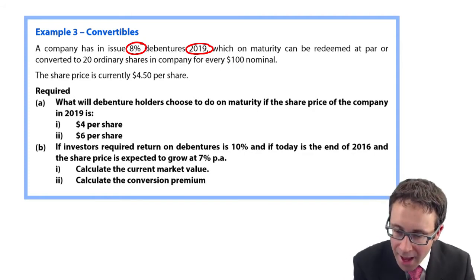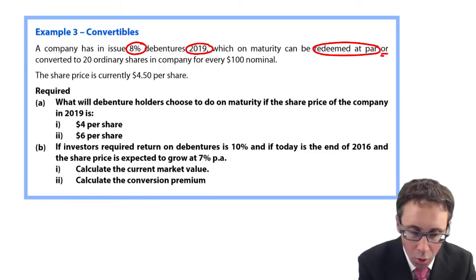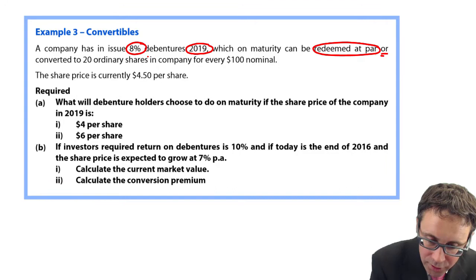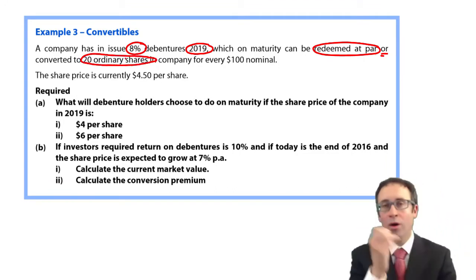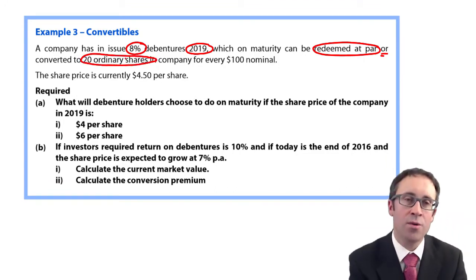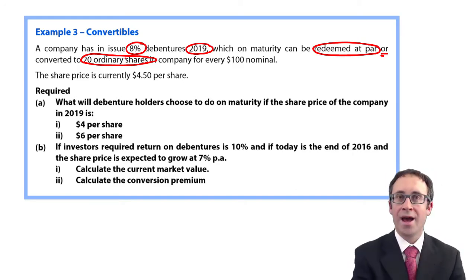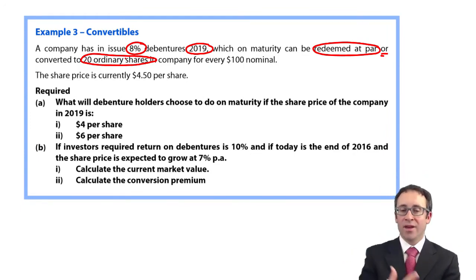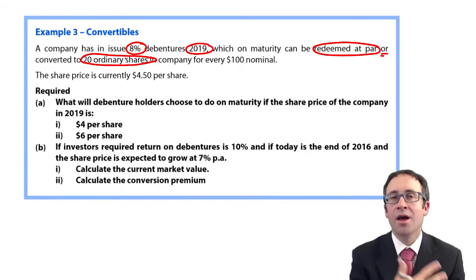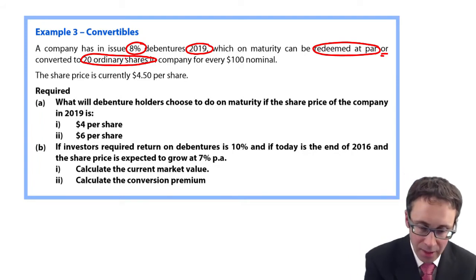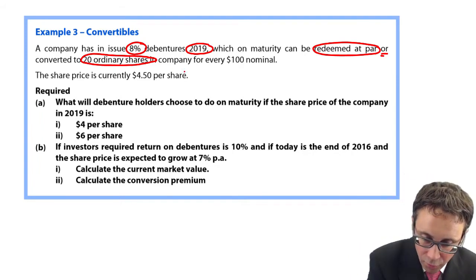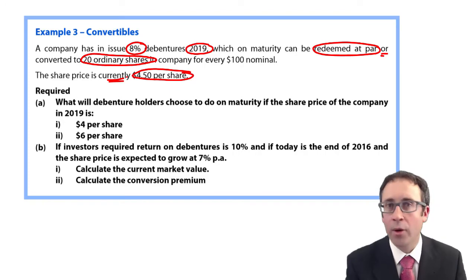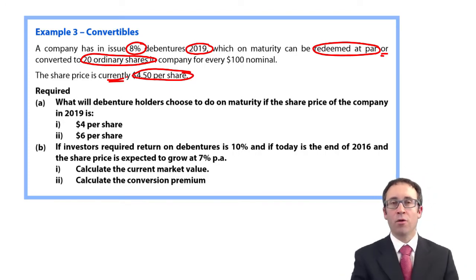However, they can be redeemed at par or converted into 20 ordinary shares in the company for every $100 of investment that you have made. So we have convertible debentures. You will either take $100 of cash or you will take 20 shares at whatever the market value is at that date. Share price is $4.50 per share. That is currently. So that is today. We don't know what it's going to be in the future.